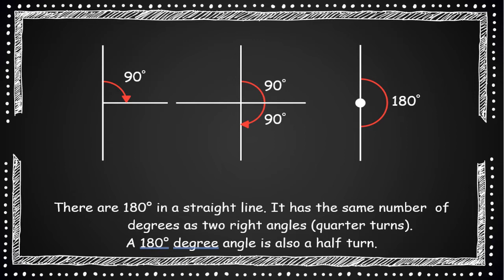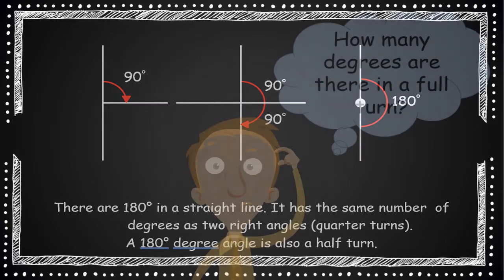Hopefully you remembered that there's 180 degrees in a straight line. It has the same number of degrees as 2 right angles or 2 quarter turns. And a 180 degree angle is also known as a half turn.